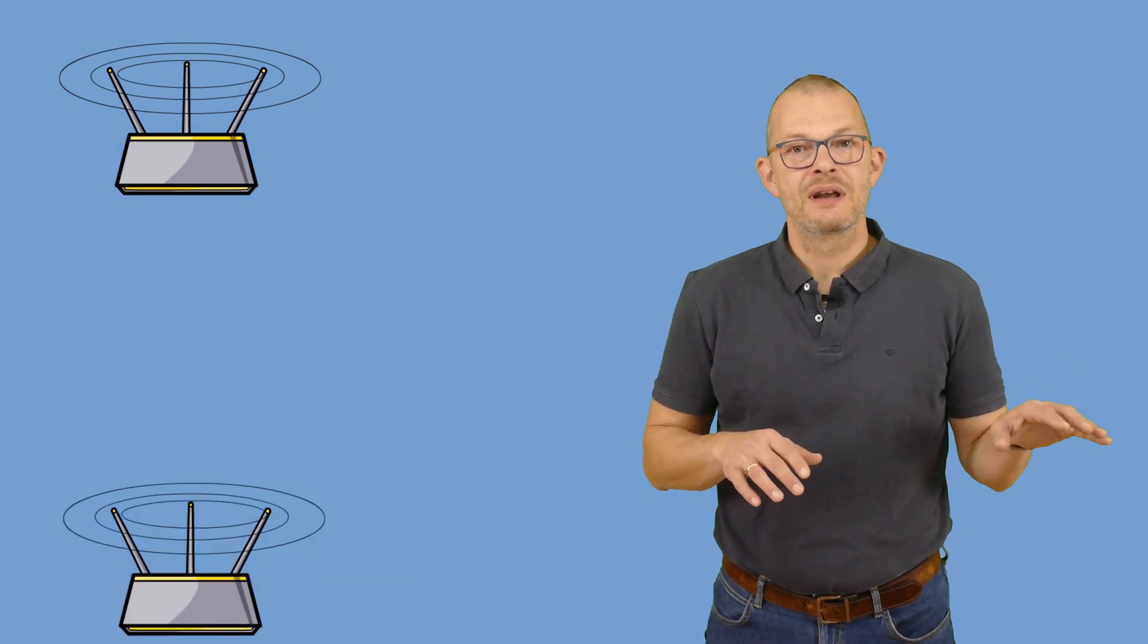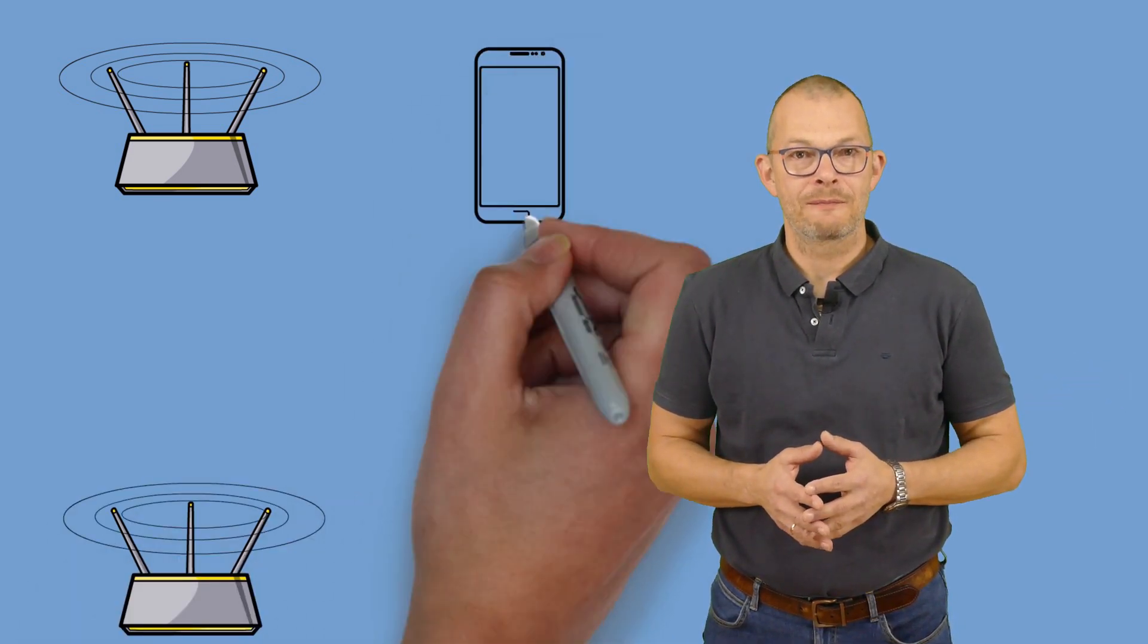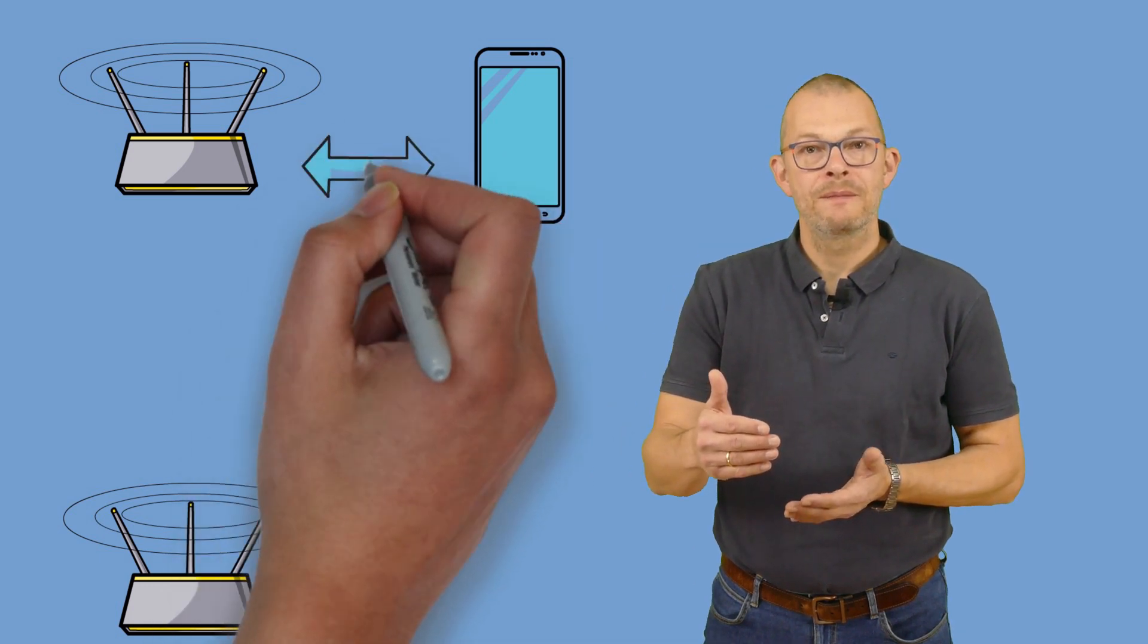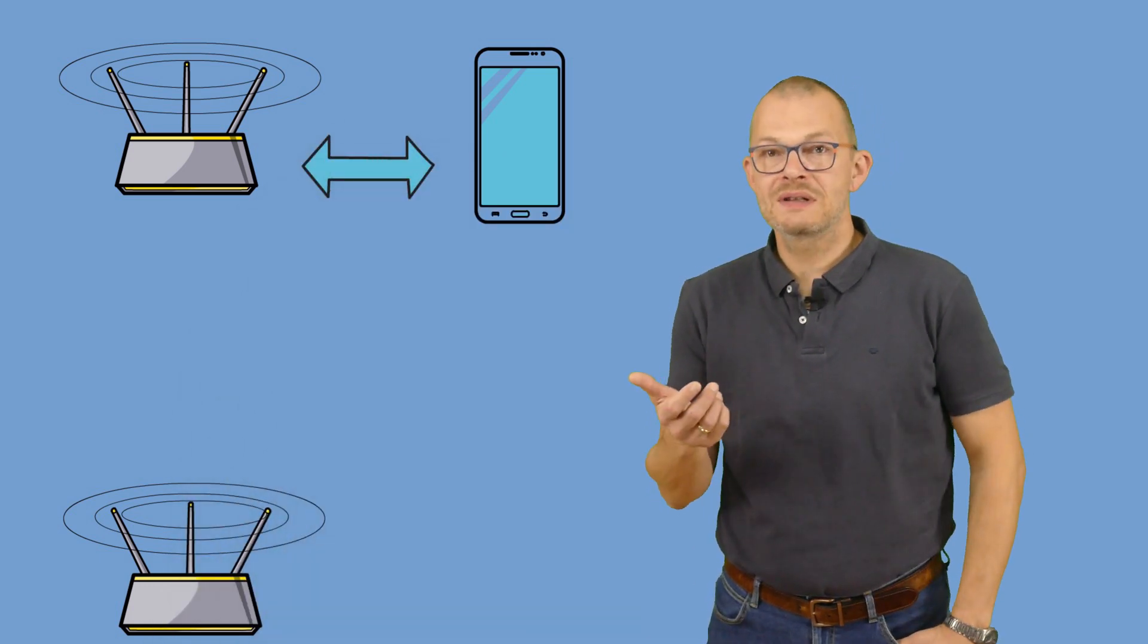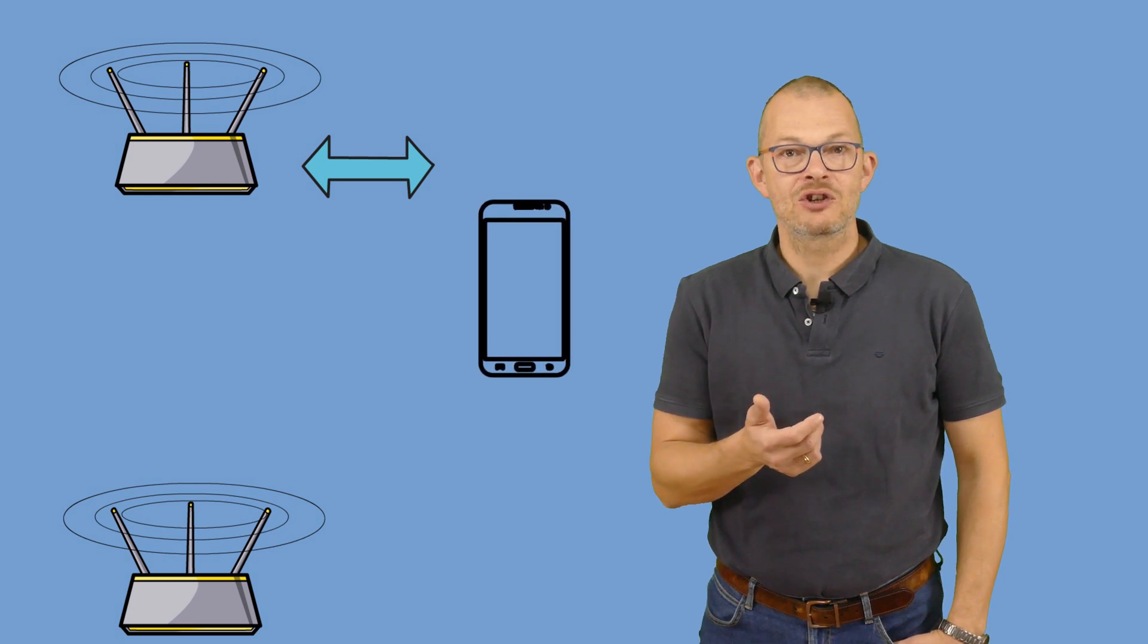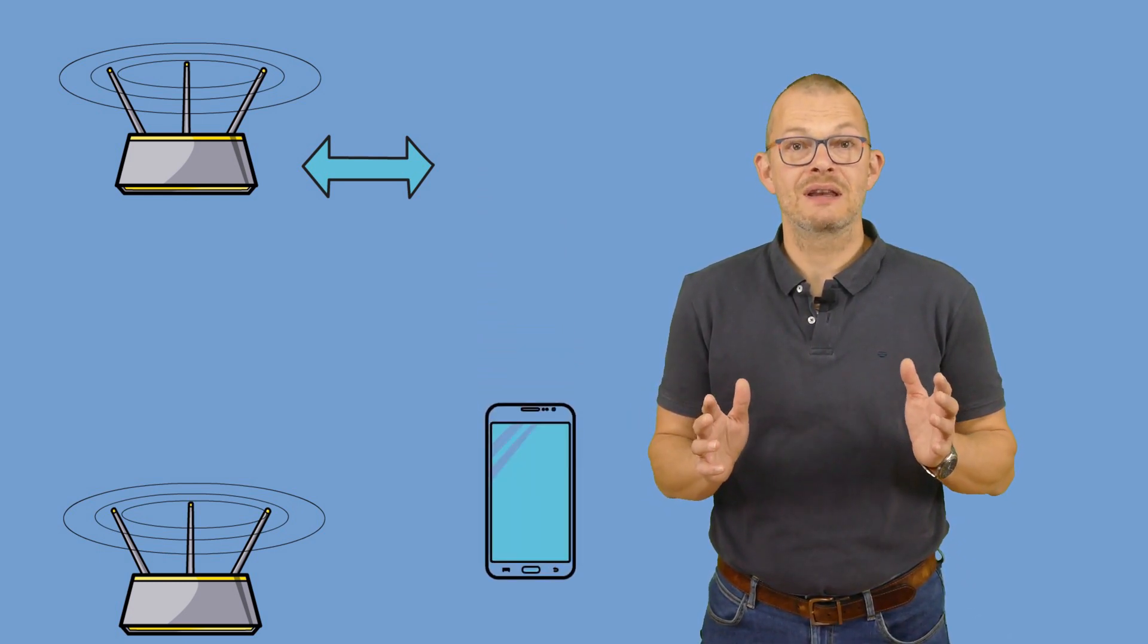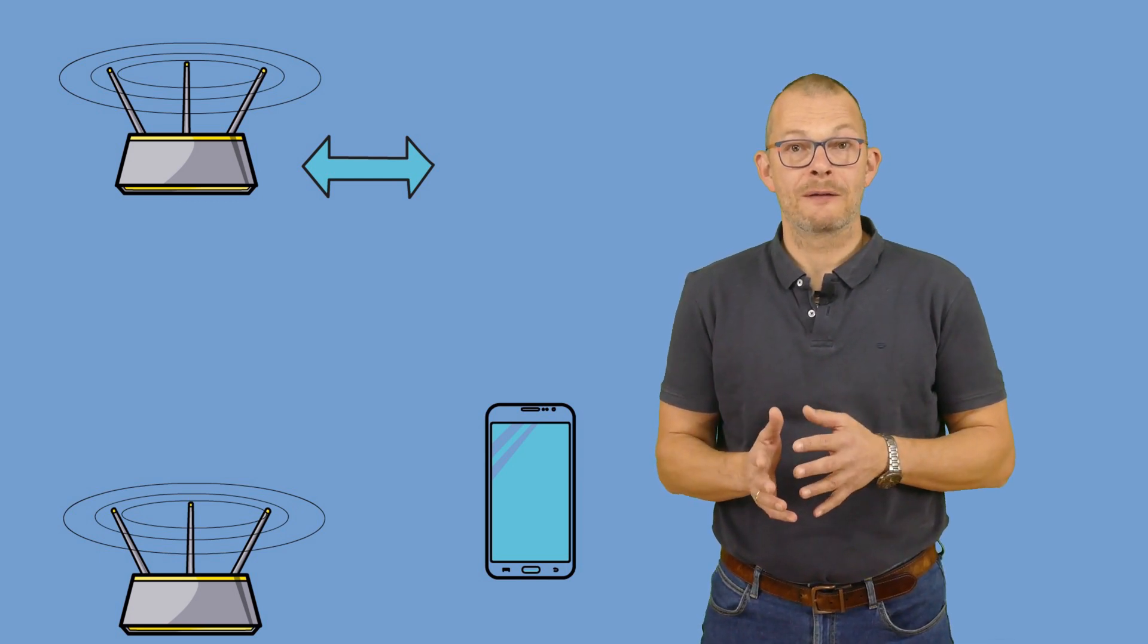Many people these days use Wi-Fi meshes to do this. A Wi-Fi mesh is basically just a bunch of access points which extend the Wi-Fi network. That means you can move from one room to the other and your tablet or phone would seamlessly connect to the node in the mesh that delivers the strongest signal without even noticing that it has switched from one node to the other.